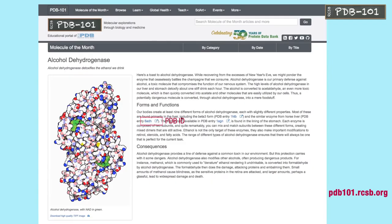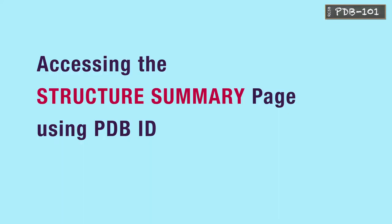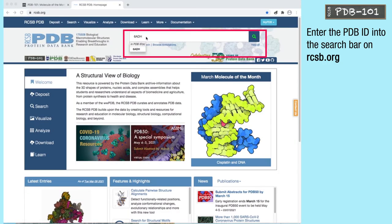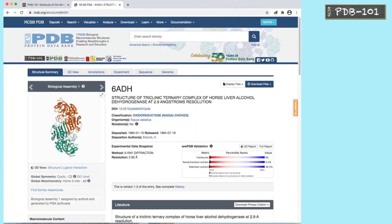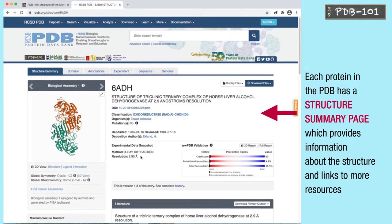PDB 101 resources also link to the reference PDB structures using the PDB ID. Enter the PDB ID into the search bar on rcsb.org. Each protein in the PDB has a structure summary page which provides information about the structure and links to more resources.